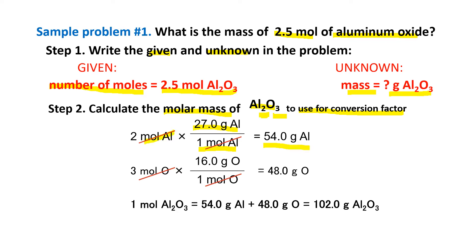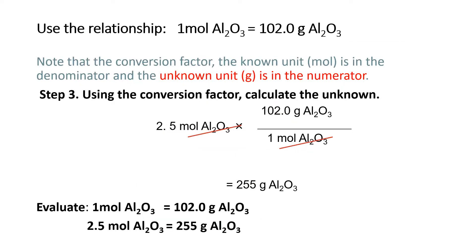Cancel the unit of mole aluminum. Next, the subscript of oxygen is 3 — so 3 moles of oxygen times the conversion factor: 16 grams of oxygen is the weight of 1 mole of oxygen. Multiplying 3 times 16 gives 48 grams of oxygen. So the mass of 1 mole of aluminum oxide equals 54 grams plus 48 grams, which equals 102 grams of aluminum oxide. This will be the relationship used as the conversion factor.